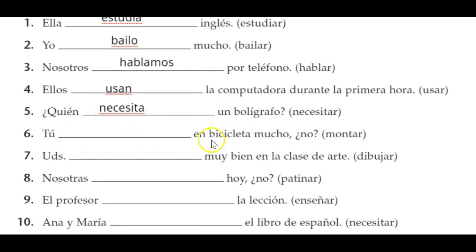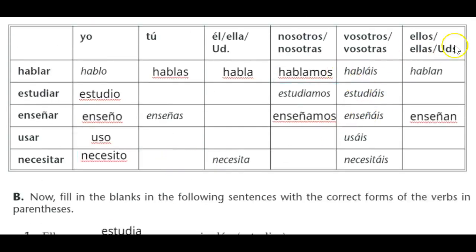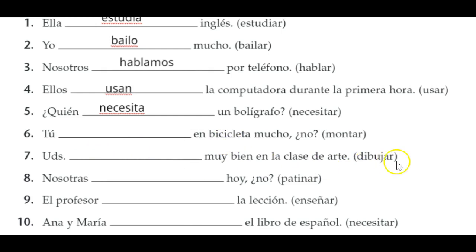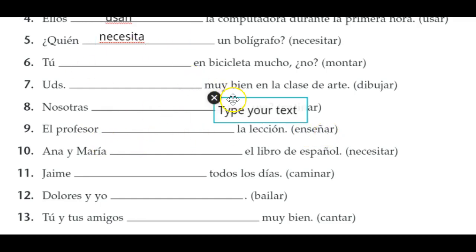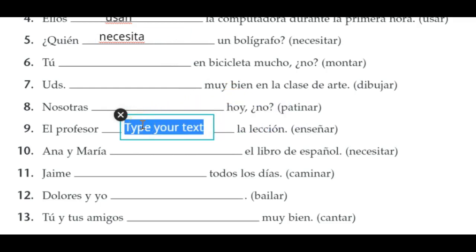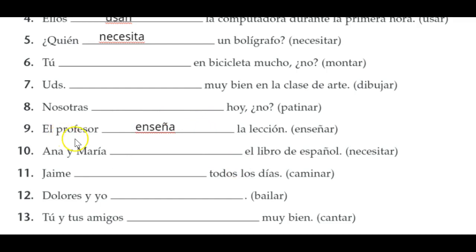For tú, put the answer in using montar with the same rules. Ustedes dibujan — you all draw. Nosotros patinamos — number eight. Number nine, el profesor — the teacher. Think of it in English: the teacher teaches — we have the S at the end, so it's third person. You use enseña because it's he or she. El profesor enseña la lección.